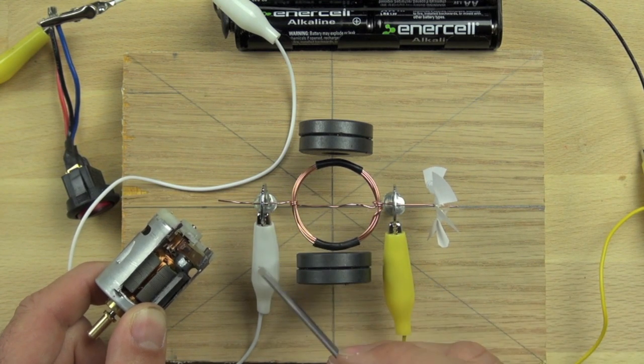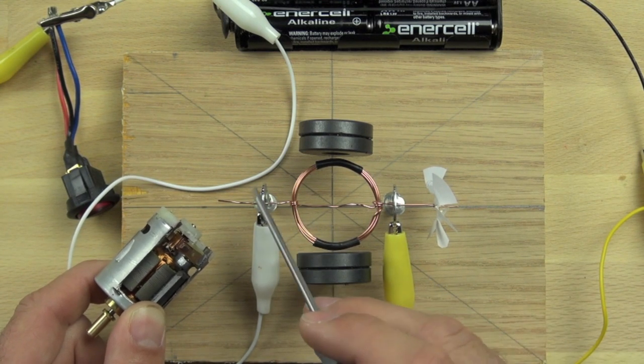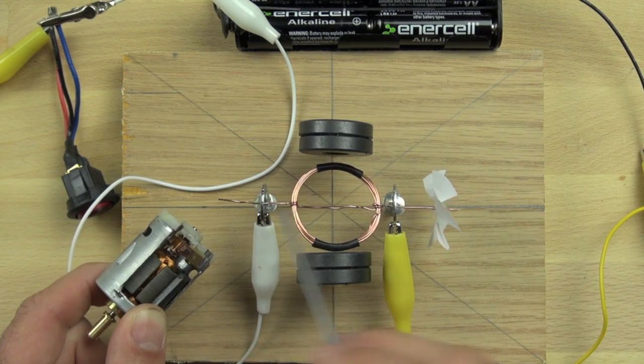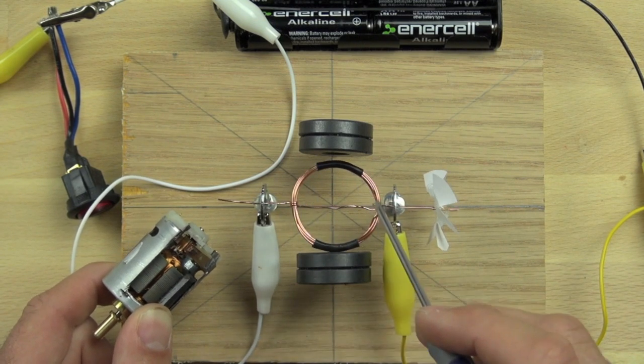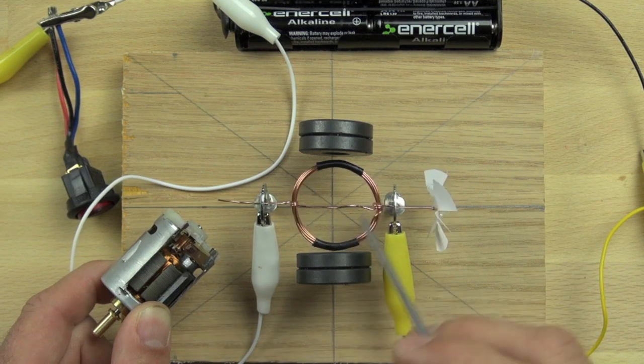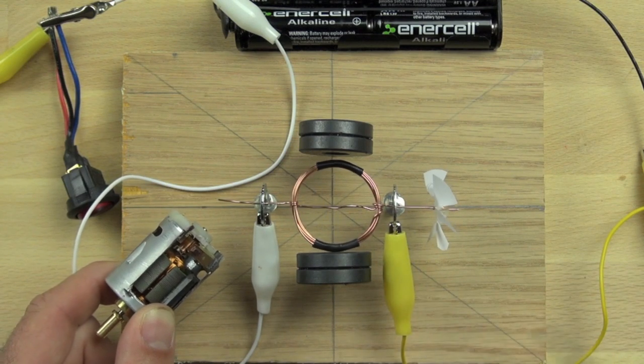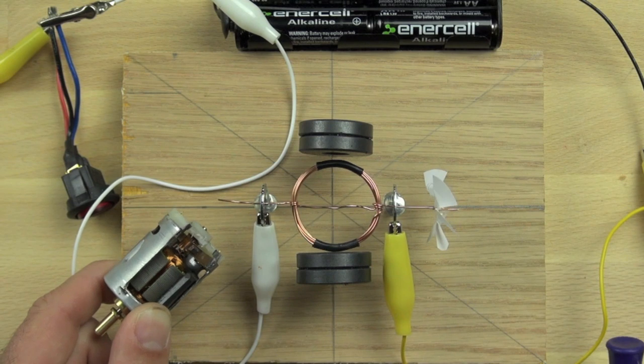So they're conducting the electricity from our battery down to our commutator or wire, and that's conducting the power through the coil or the armature, and then back out the other side and back to the battery and completing the circuit.